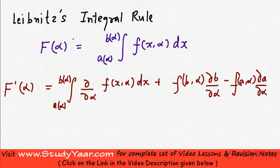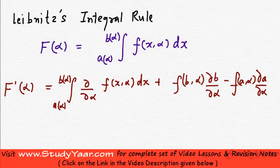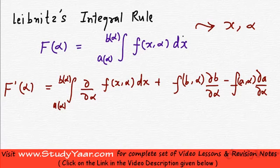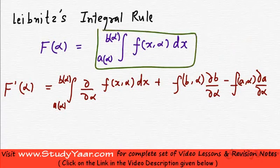Let's look at Leibniz integral rule. So if I have f of alpha equal to integral from a of alpha to b of alpha of f of x comma alpha dx. When you integrate this, you have x and alpha, and when you replace x with b(alpha) and a(alpha) and take the limits, you essentially get a function of alpha.